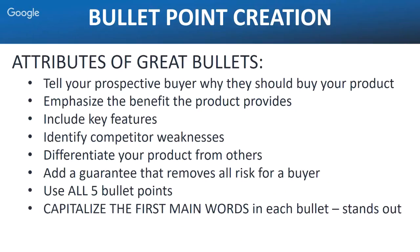Include key features as well — for example, that it's got magnets in it, or that it's 99.9% pure copper. That's a feature rather than a benefit, but it's a good point to mention some features. Identify competitors' weaknesses by looking at one-star and two-star reviews of competitors — they may say the copper was too thin, the magnets weren't strong enough, or it didn't come in a nice box.